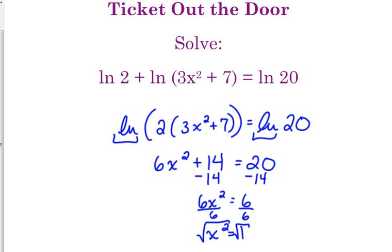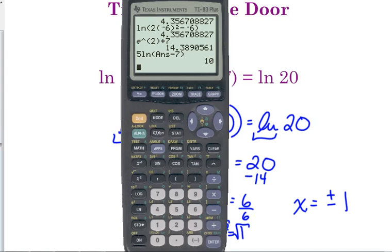When we take the square root, what do we need to remember? The plus or minus. Anytime you take the square root, remember the plus or minus. And the square root of 1 is 1. So, positive and negative 1 should both be solutions to this equation.